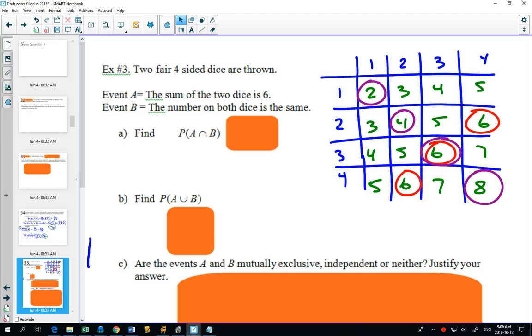Find the probability of A and B. So in this case, we're looking at our diagram. What are the chances of getting that the sum is six and that the number on both dices are the same? Well, the only way that happens is the one number that's circled in both colors. Remember, and means both situations have to occur.